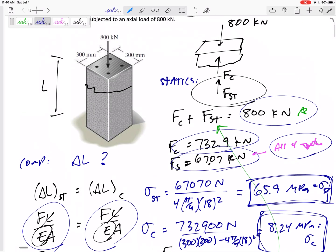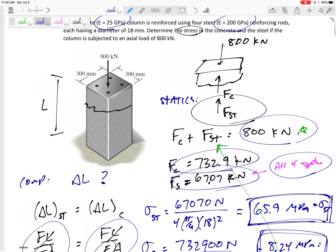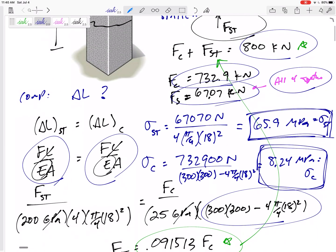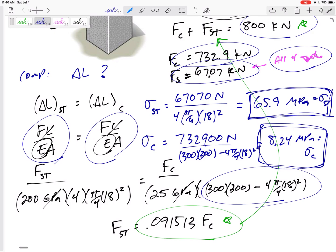But problems like this, you need one or sometimes two, you need some equation from statics. That was F concrete plus F steel adds up to 800. You kind of already knew that. And then we needed another equation from compatibility. In this case, the delta Ls, FL over EAs, equal each other. I did that to find the forces. Then I took the forces divided by areas to find the stress.